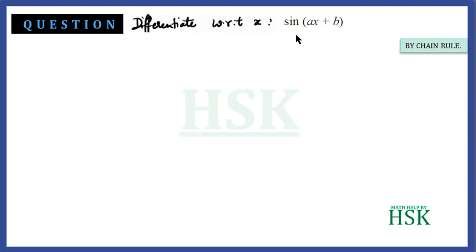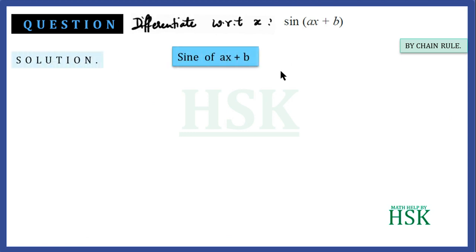Now we shall differentiate sin(ax+b) by the chain rule. To solve this, we read sin(ax+b) as consisting of two functions: the outer function sin and the inner function ax+b.